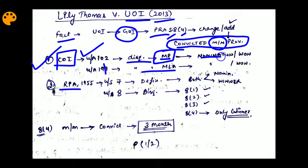These disqualification provisions apply to both: the person who is going to file his nomination to contest the election, and those who have already won the election and are now MPs or MLAs.